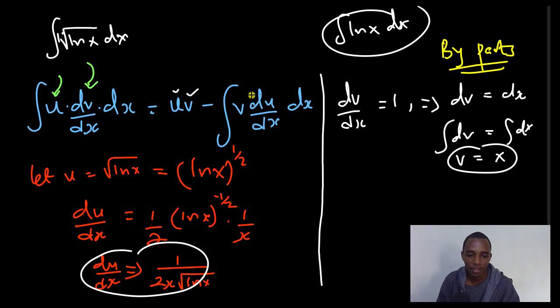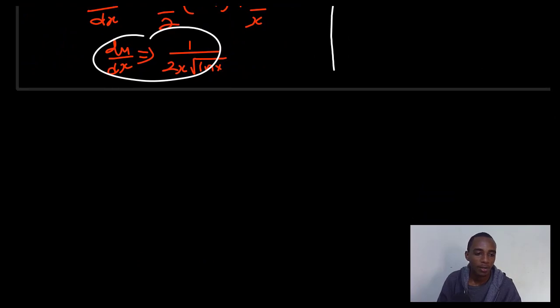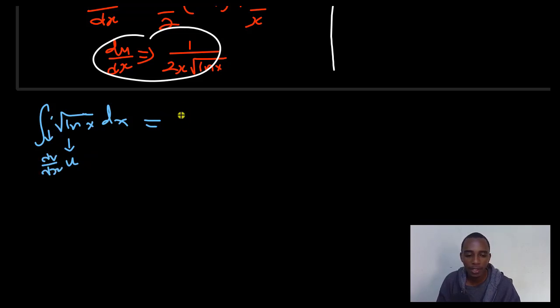We have everything to put in this expression here to go ahead and integrate this. Now, the integral of square root of ln x dx. This is basically what you would say as your u and then the dv dx is just 1 here. This is equal to uv.